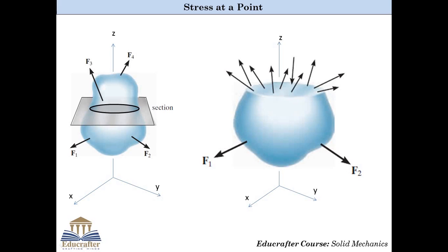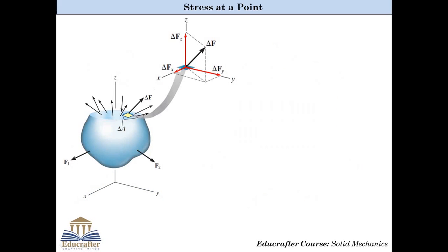It is seen that small resistive forces are induced throughout the cross section. Now, let us divide the entire cross section into small area elements with area delta A. Let us focus on one such small area element and look at the resistance offered by that small segment. We refer to the small resistive force offered by the element as delta F, where delta Fx, delta Fy and delta Fz are the three components of delta F in three mutually perpendicular directions.